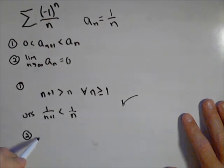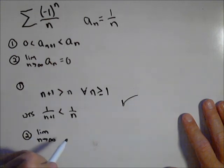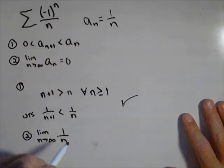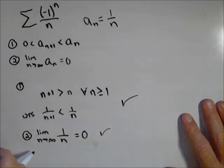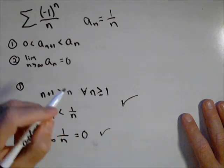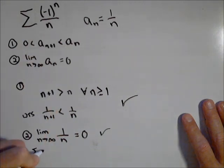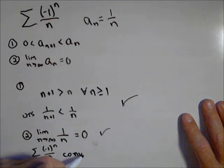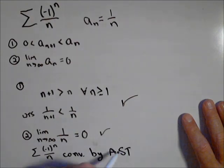Number two, the limit as n goes to infinity of one over n equals zero. It checks. So our series negative one to the n over n is convergent by the alternating series test.